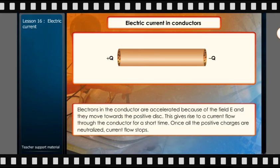Electrons in the conductor are accelerated because of the field E and they move towards the positive disk. This gives rise to a current flow through the conductor for a short time. Once all the positive charges are neutralized, current flow stops.